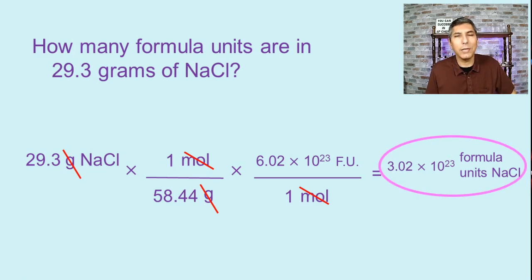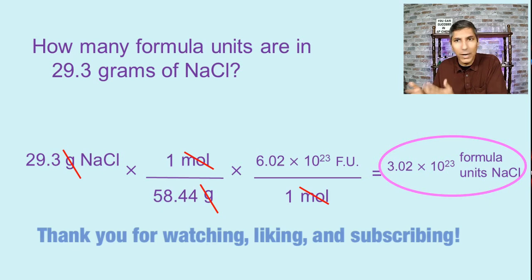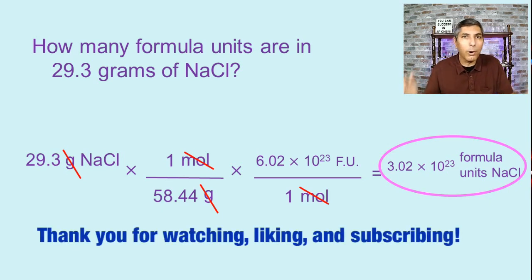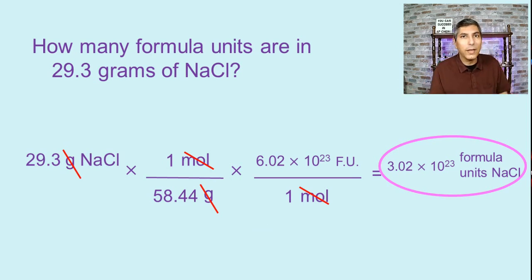So that is the answer. So that's pretty neat that we can actually take a mass of a substance we've weighed out on a scale or a balance, and we can determine how many little particles are actually in that sample by just doing a couple conversions. I hope you learned something from this video. Hope you enjoyed it. If you did, please consider smashing that like button. I would really appreciate that. In the next video, we're going to move on to a different topic, which is going to be the motion of particles in a substance. I hope you enjoyed the video. Thanks for watching. I hope to see you next time.